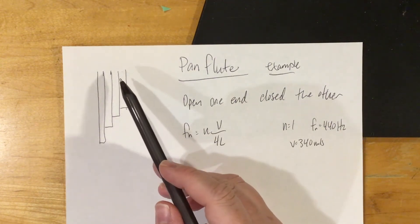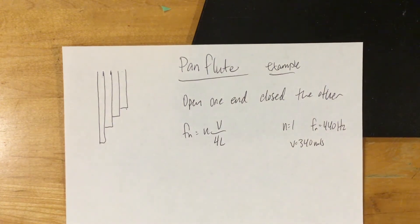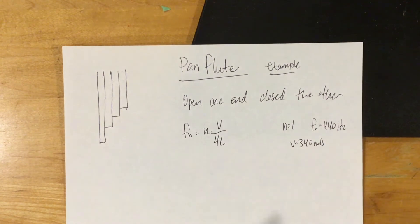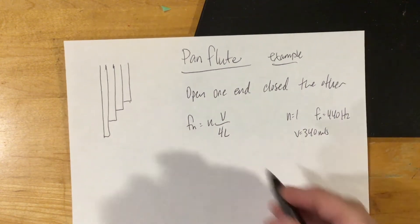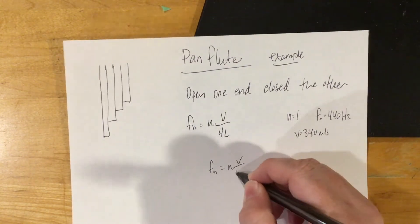You're dealing with one end closed and one end open, so you're using f of n equals n v over 4L. To rearrange that for L, you have f of n equals n v over 4L.